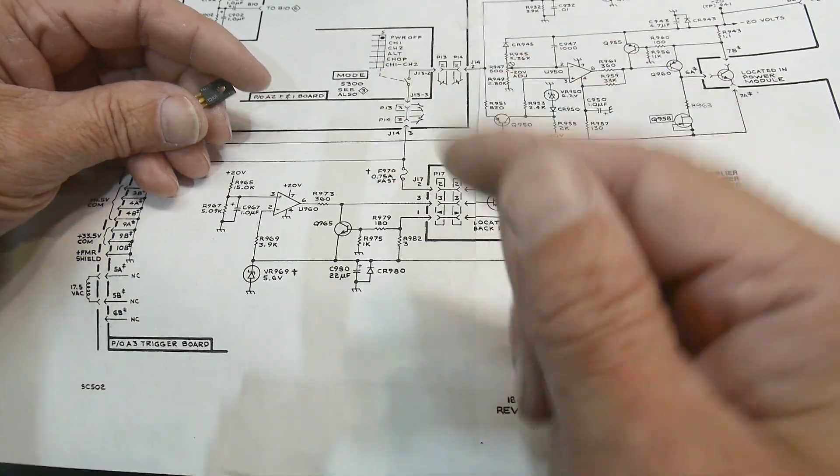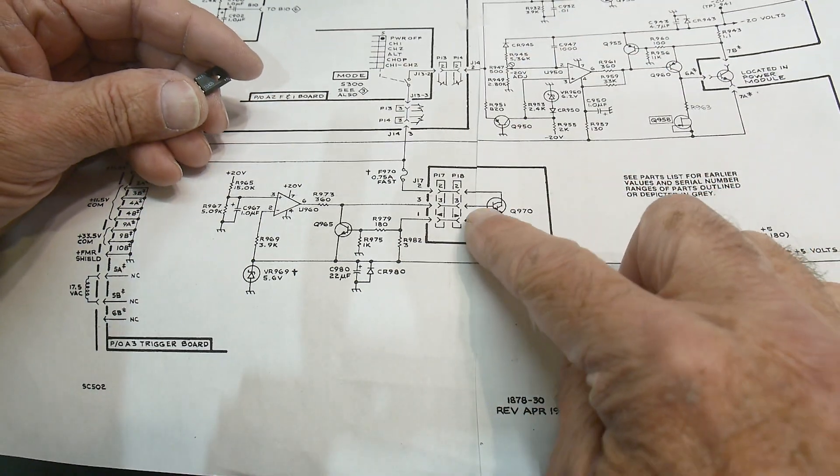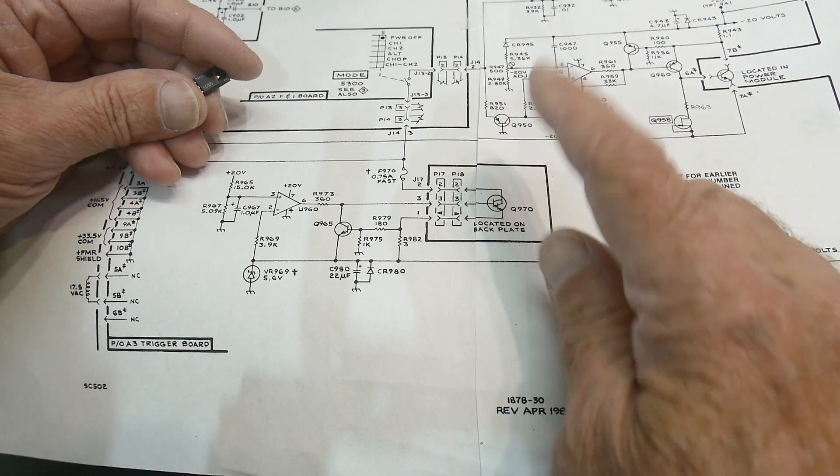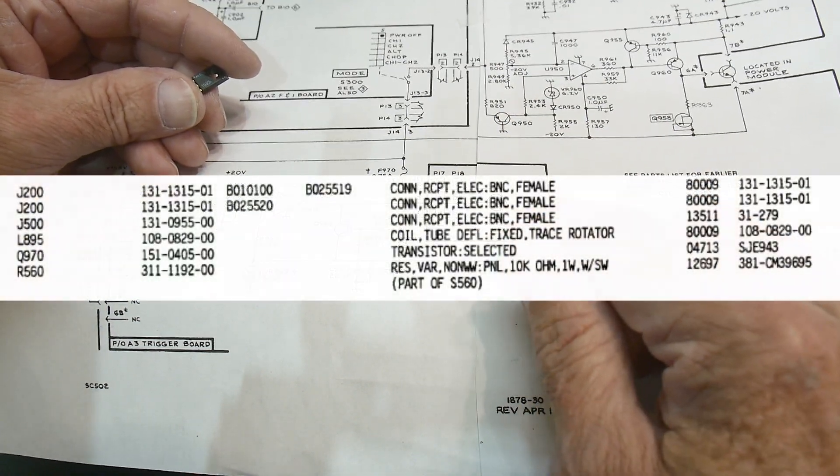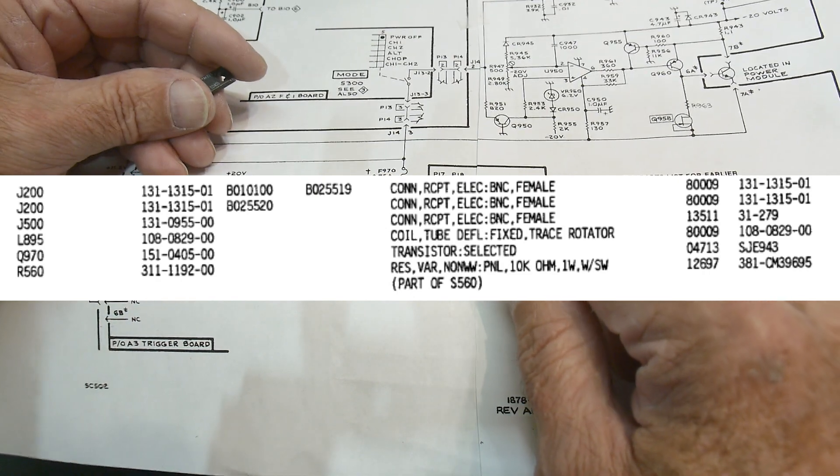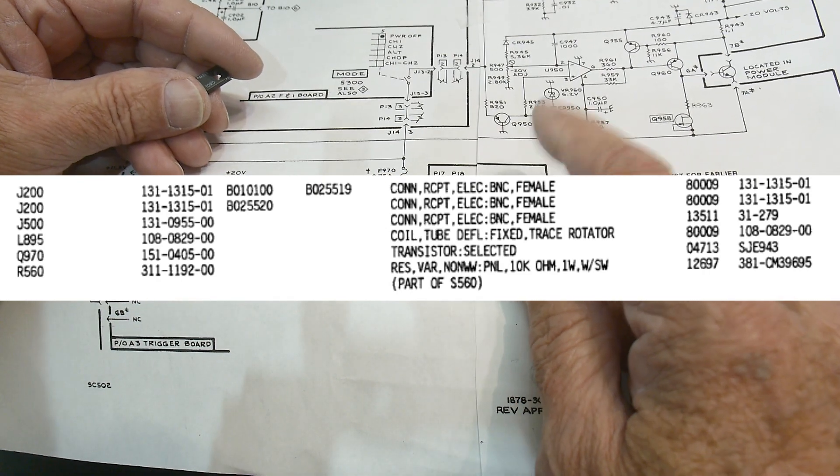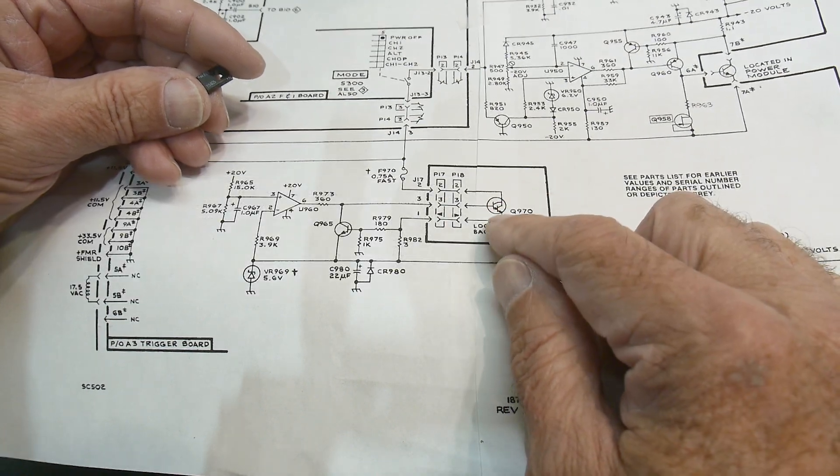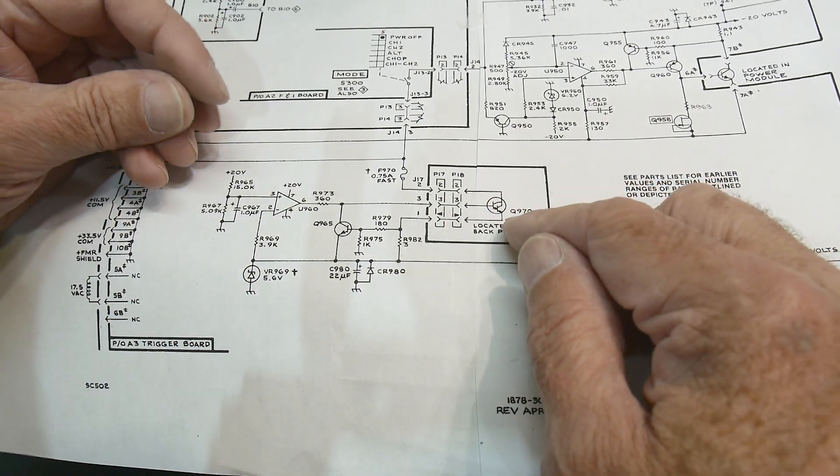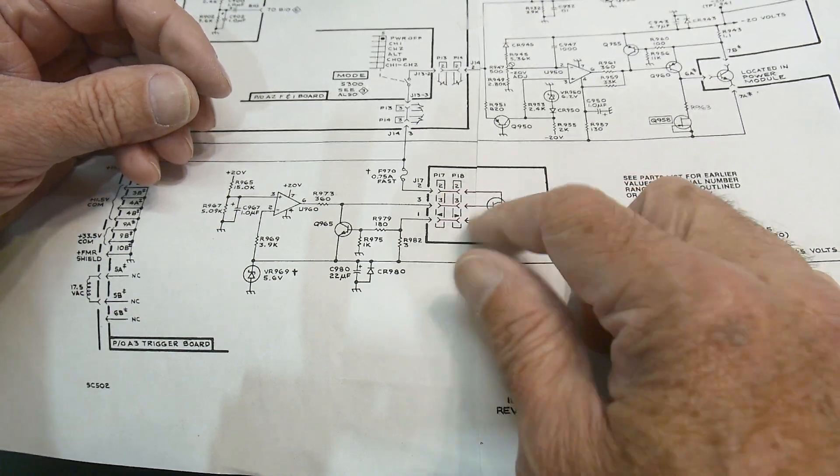And then, to boot, what makes it worse, is this in the parts list of the manual says factory selected. So, I think what they did was they found a part, and they sorted it for high HFE. They needed a high HFE to make this work.